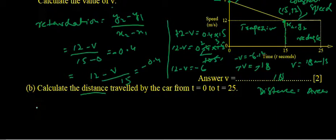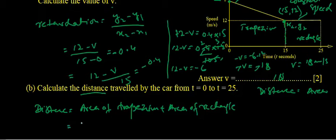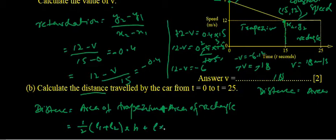So we find the area of two: one is trapezium and rectangle. Now the distance is area of trapezium plus area of rectangle. Area of trapezium is 1/2 times (l1 plus l2) multiplied by height, plus area of rectangle is length multiplied by breadth.